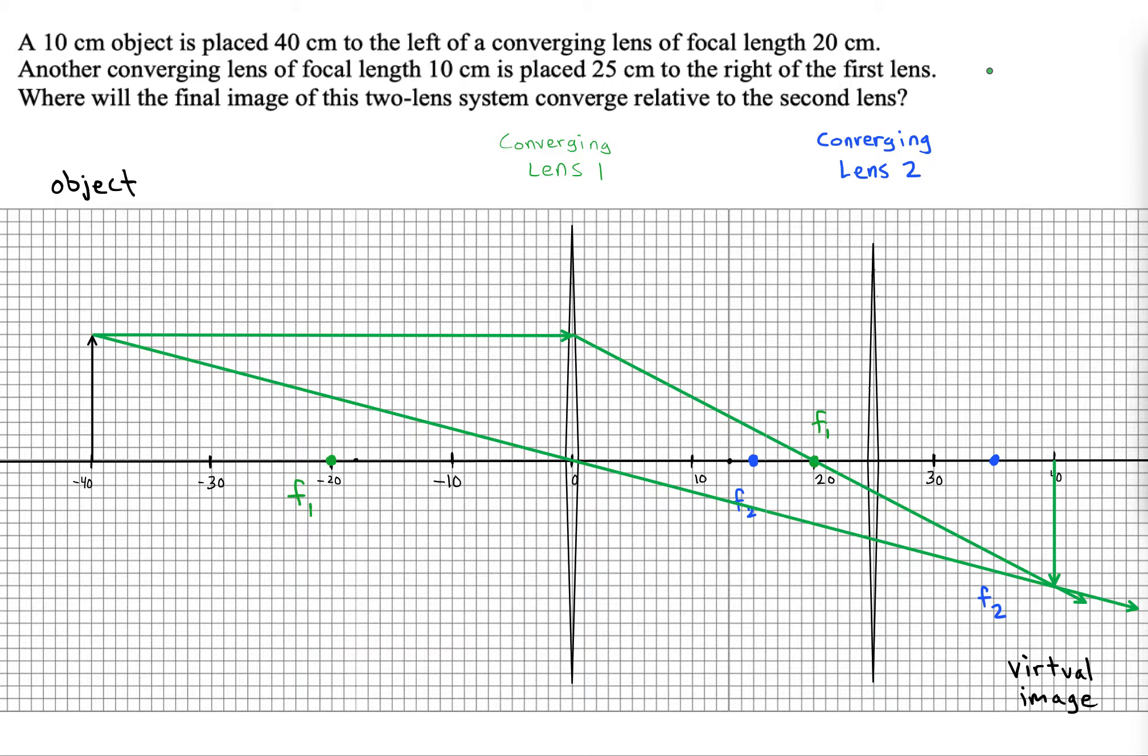You see these two rays here that are coming through lens 2, there's nothing special about them. They can't be used to easily construct where the final image would be. So what I want to do is come up with every single ray that might be relevant.